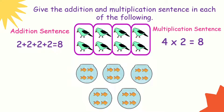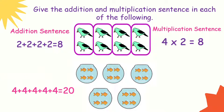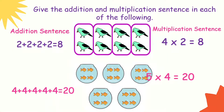Let's have the next one. There are 5 groups of 4 — this is an aquarium. So 4 plus 4 plus 4 plus 4 plus 4 equals 20. The multiplication sentence is 5 times 4 equals 20.